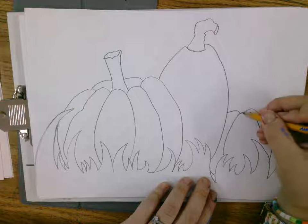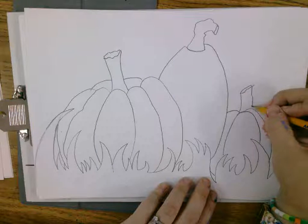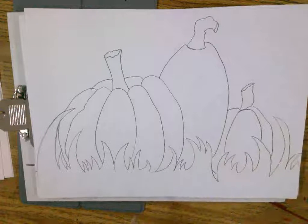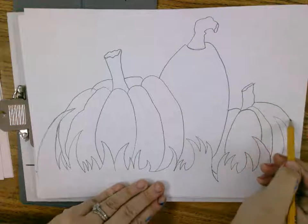And then another stem. I'm going to keep going. And then a little rainbow. Okay. There's some pumpkins.